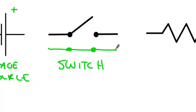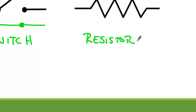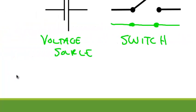And this last one is for a resistor. Sometimes you'll see this for anything we call a load, which is using the current — so a light bulb, a lamp, a toaster oven — any of those things could potentially be represented by that resistor symbol.